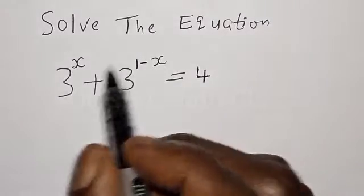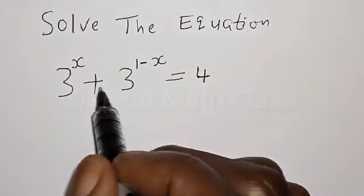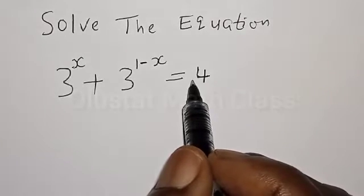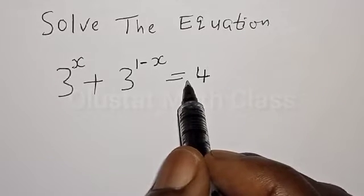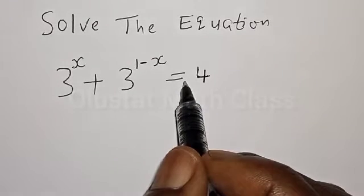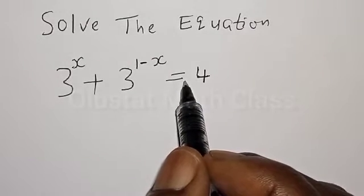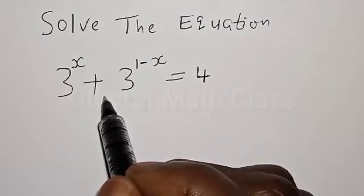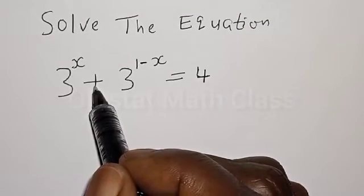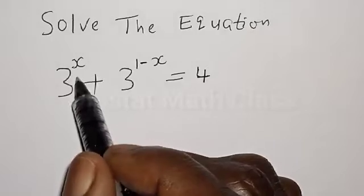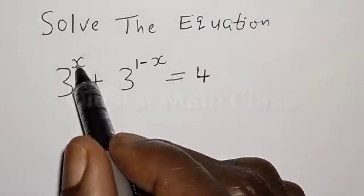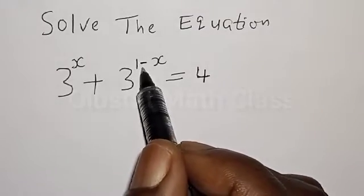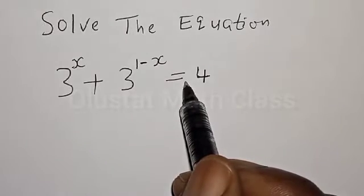The equation is: 3 raised to power x plus 3 raised to power 1 minus x is equal to 4. In this class we're going to find the value of x from this given exponential equation.